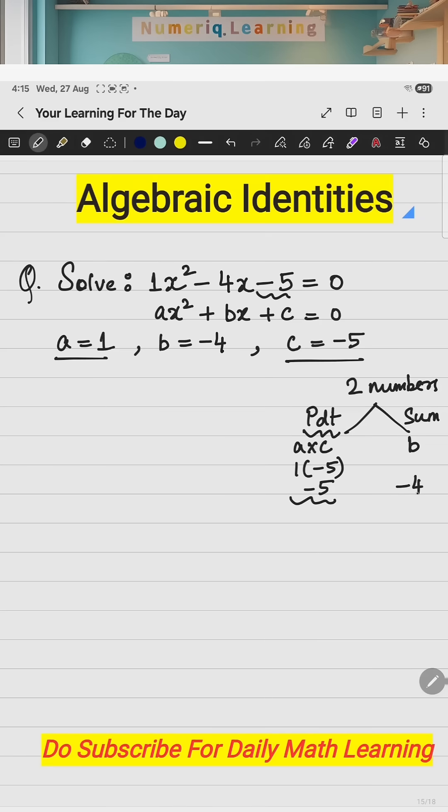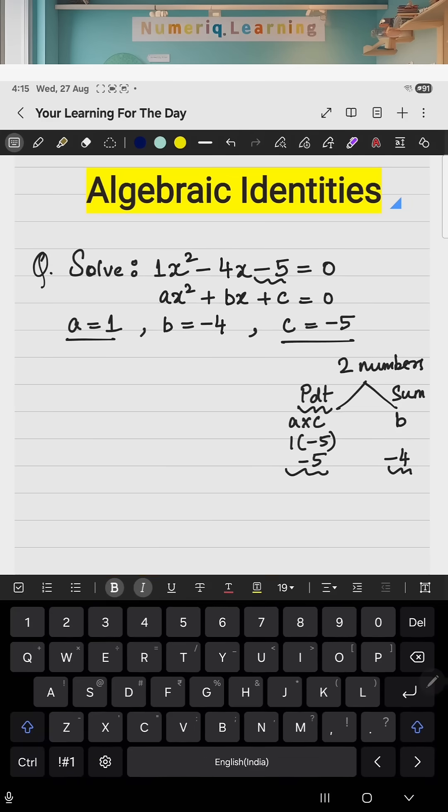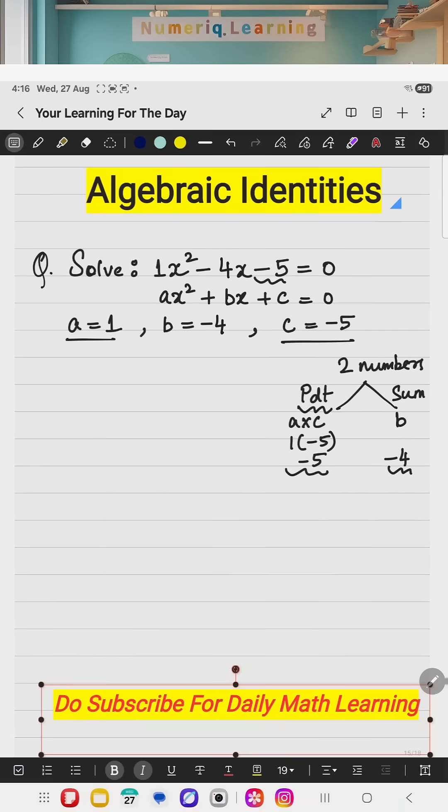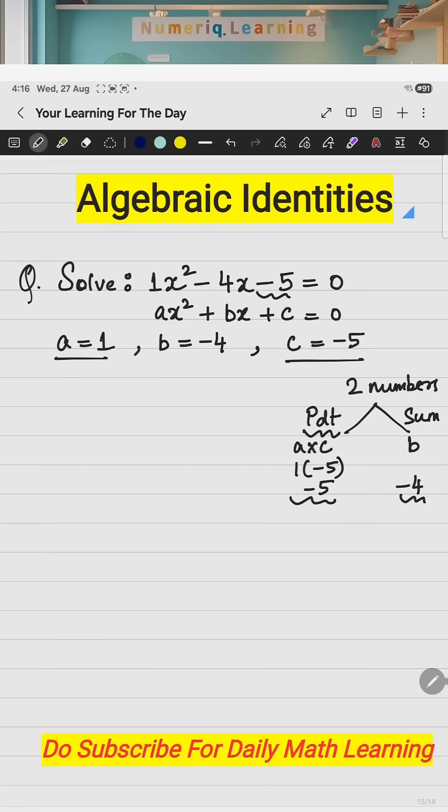What is b? It is minus 4. So, you have to think which two numbers when multiplied will give you minus 5 which when added will give you minus 4. So, it is minus 5 and plus 1. You can check minus 5 into 1 is minus 5. Minus 5 plus 1 equal to minus 4.